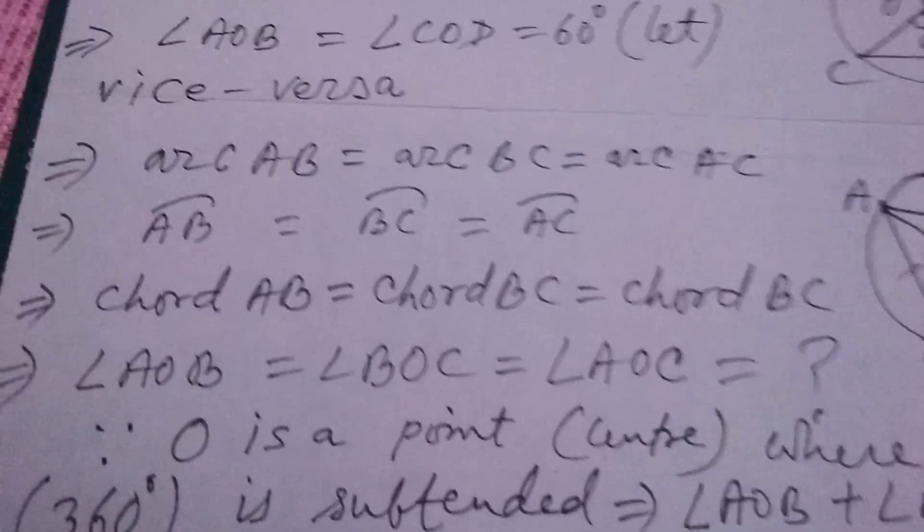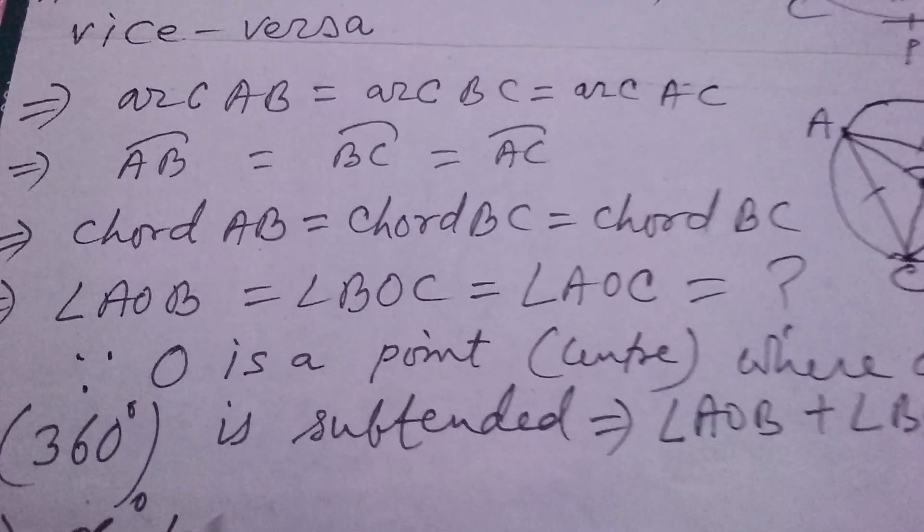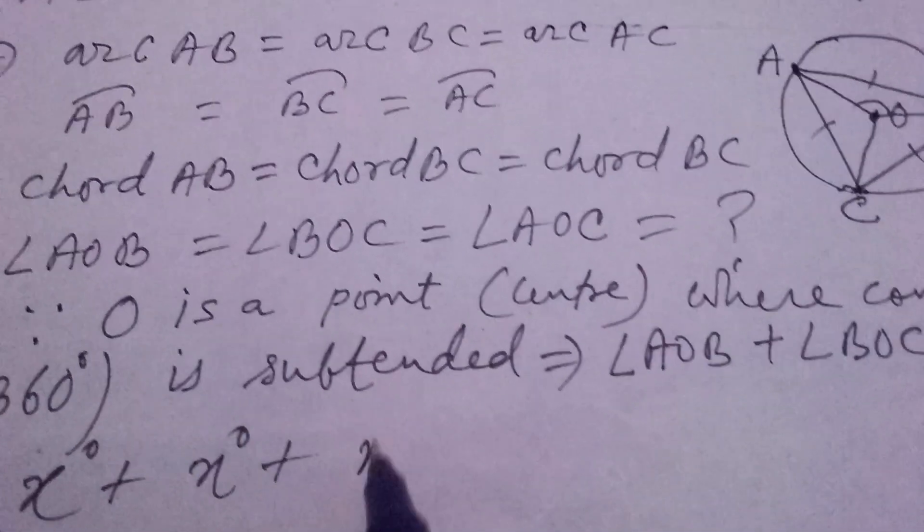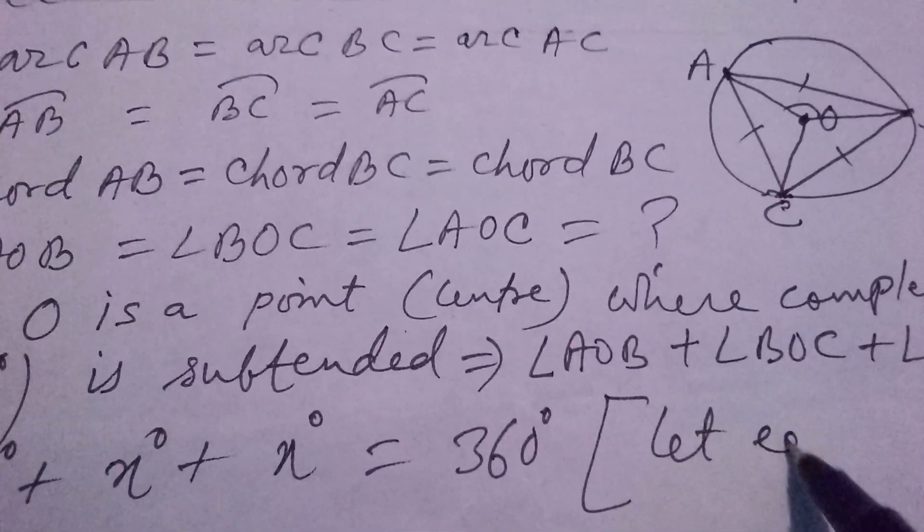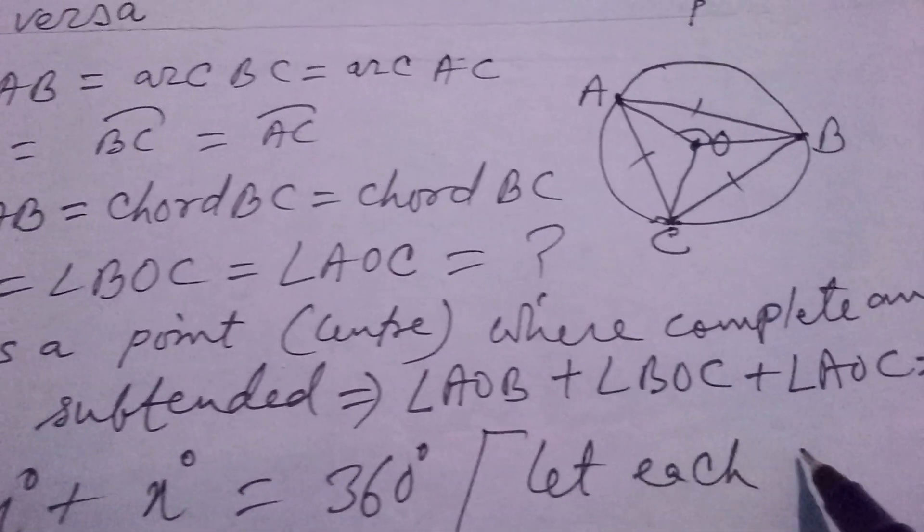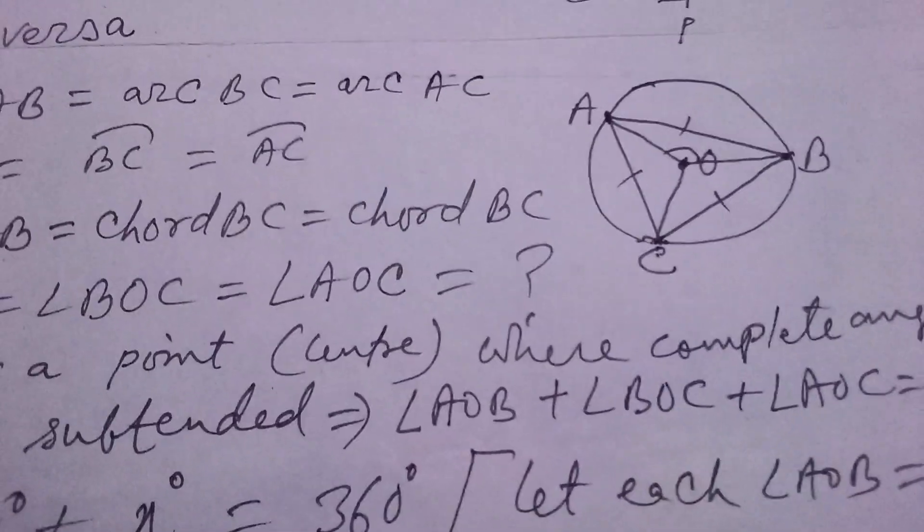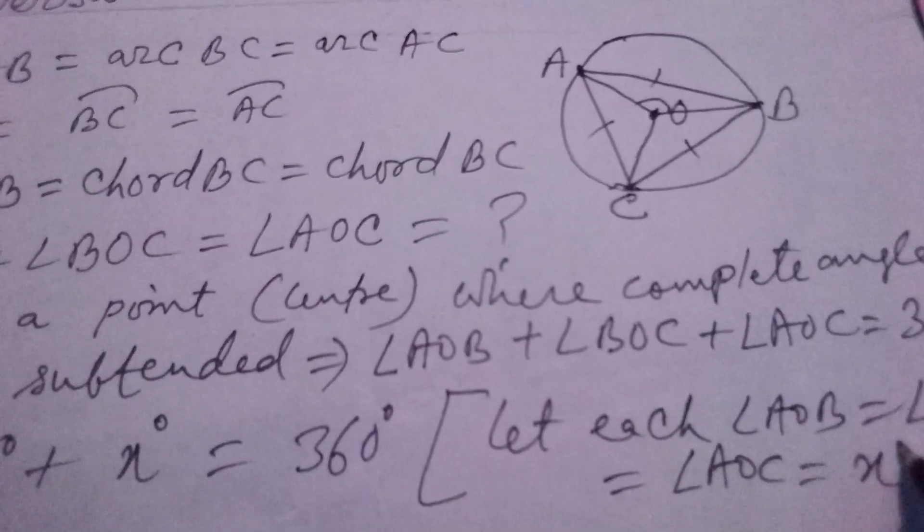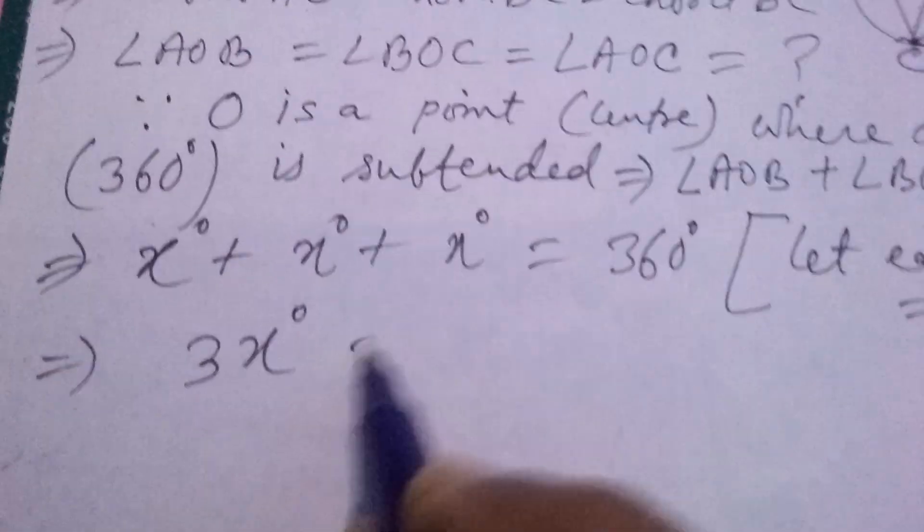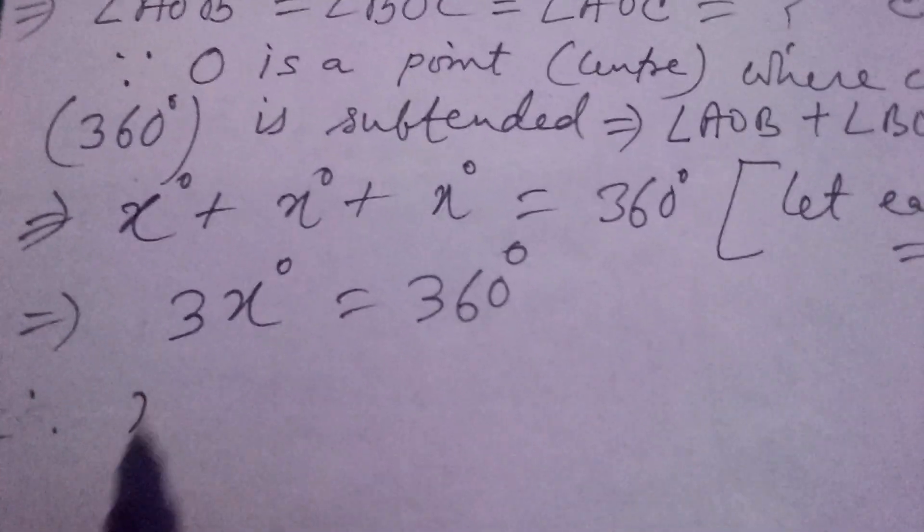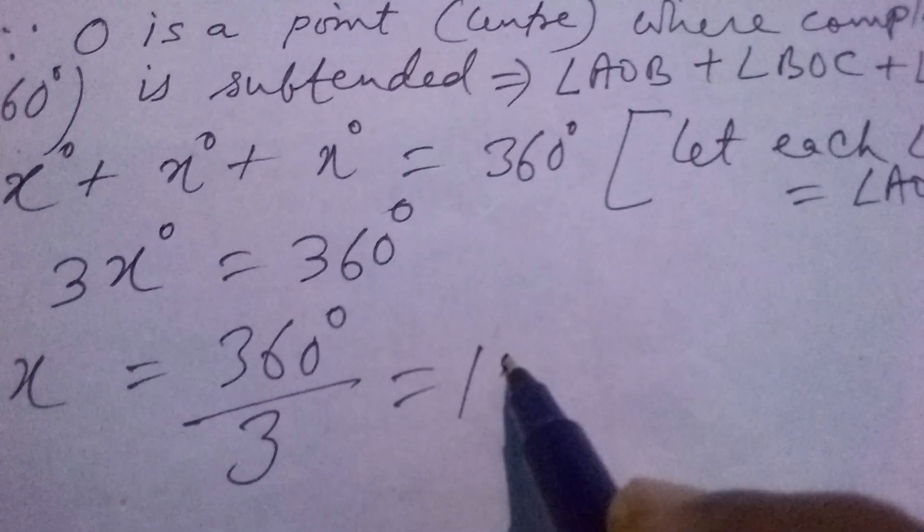And since, just now I told, all these three angles are equal, suppose all are x degrees, and x plus x plus x degrees, that is 360 degrees. Let each angle AOB equals to angle BOC equals to angle AOC equals to x degrees. So what we get? 3x degrees equals to 360 degrees, and therefore x is equals to 360 degrees divided by 3, that is equals to 120 degrees.